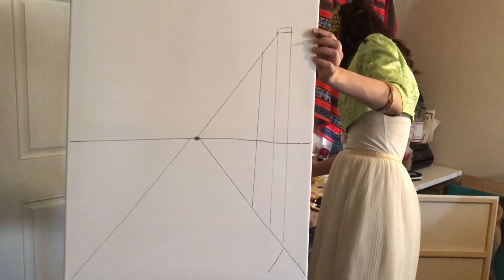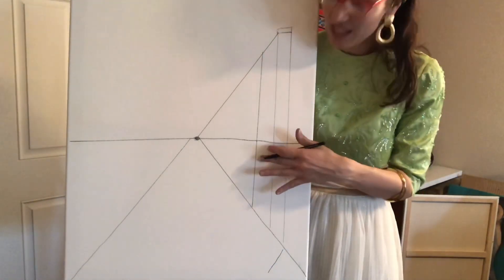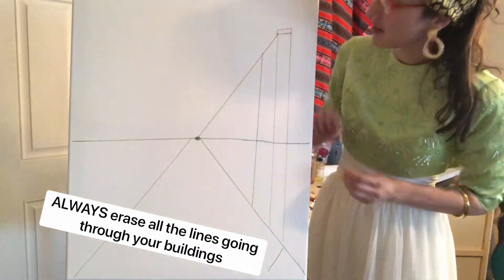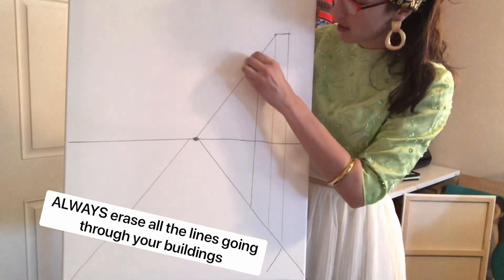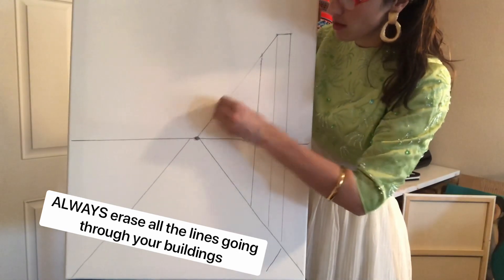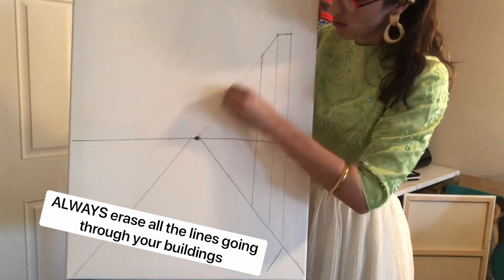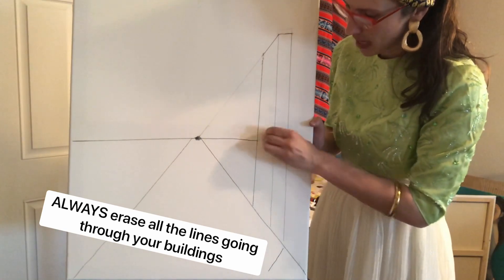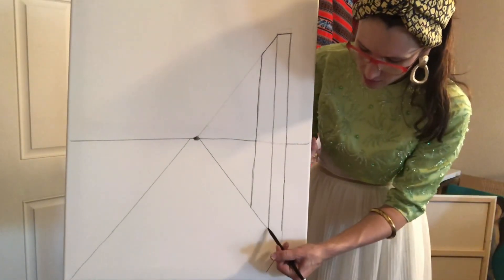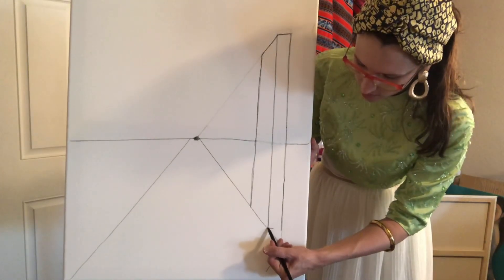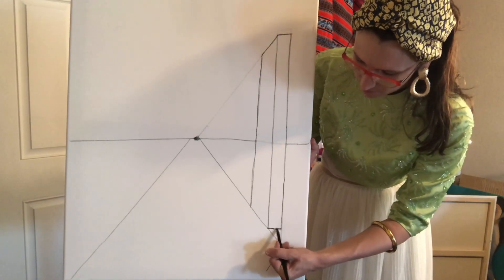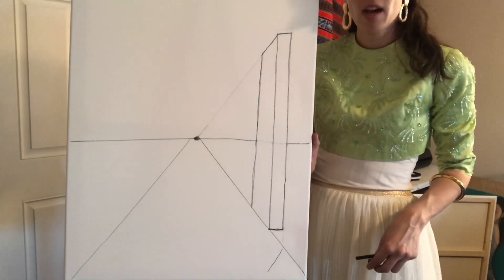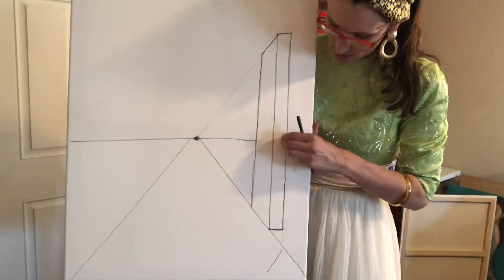Now there's one thing that's really important that we need to do next and we need to erase some lines because some of these lines look a little confusing. So if you need to go get an eraser, go get it now. So what I actually have to do with this one is I need it to go straight across like that. So I actually come back and I erase this line. Do you guys see how we have a three dimensional rectangular prism right now? We've got a building.